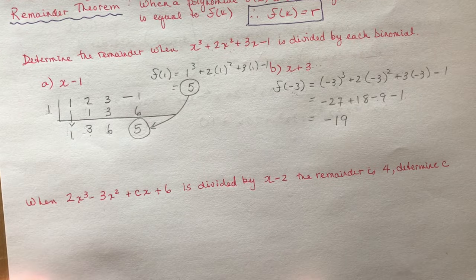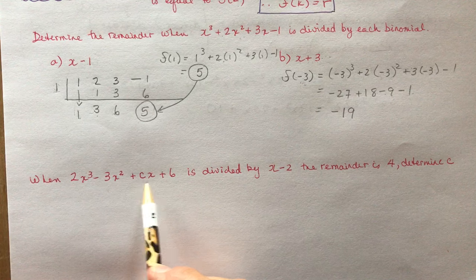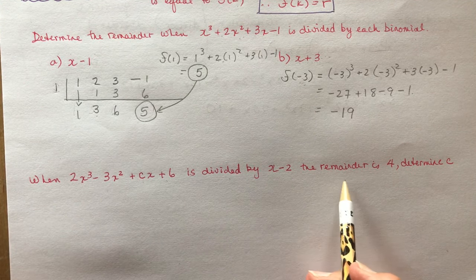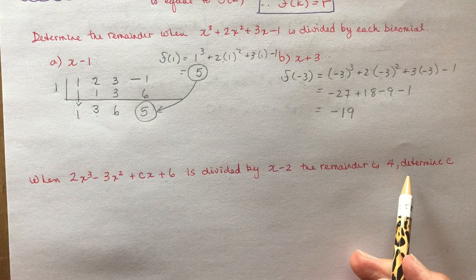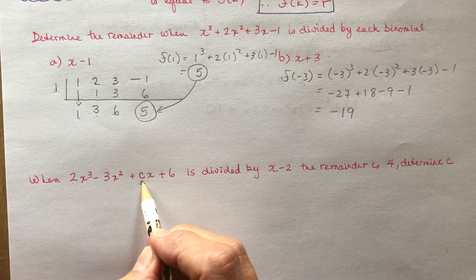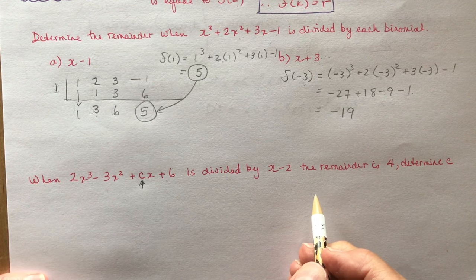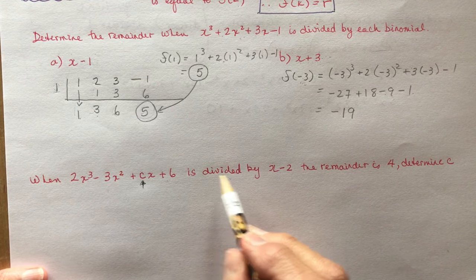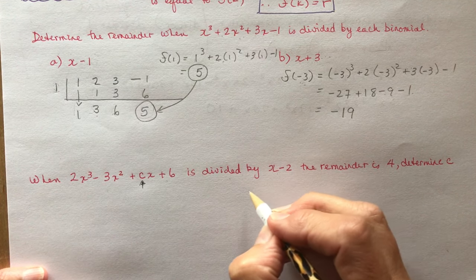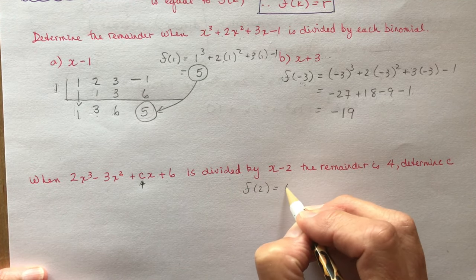Here's another example. It says: when 2x cubed minus 3x squared plus cx plus 6 is divided by x minus 2, the remainder is 4. Determine c. So we're trying to solve for c. If it's divided by x minus 2 and the remainder is 4, then that means f at 2 has to be equal to 4.